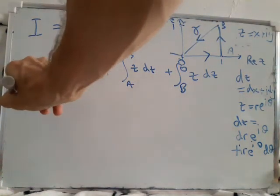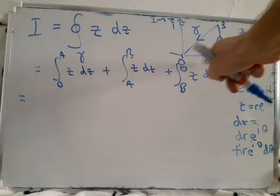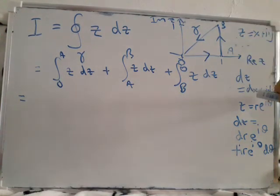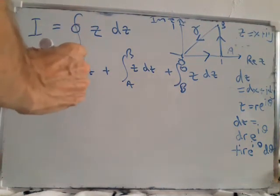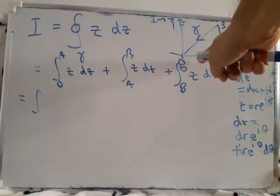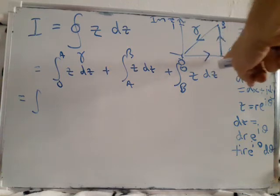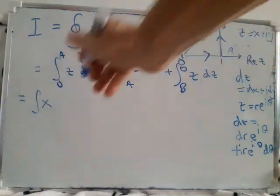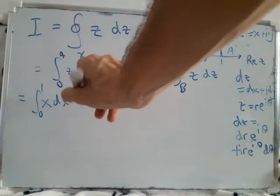Now if we see what happens in this bit from 0 to A, y is not changing. So the dy bit is 0, and dz is simply dx. So what is z? Well, z is x plus iy. y is 0 along that bit, so it's just x. And it's the integral of x dx from 0 to 1.